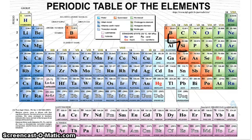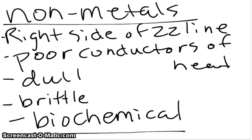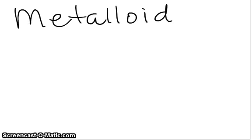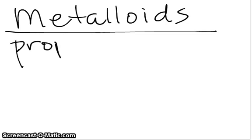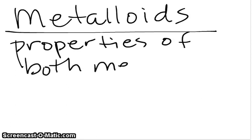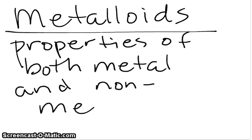So the zigzag line - right along the line, in this particular table they are colored this orangey color, right here. Right along the line, these are called the metalloids. You need to write this down: metalloids have properties of both metal and nonmetal.